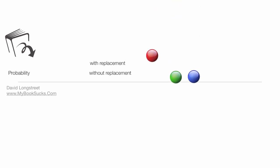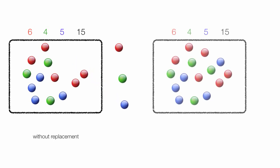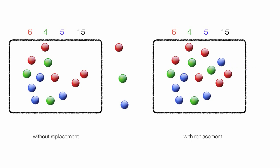I'm going to use red, green, and blue marbles. Without replacement means I take a marble out, then another marble, and then another marble without replacement. Replacement means that I take a marble out and I put it back, take another marble out and put it back, and take the last marble out and put it back.